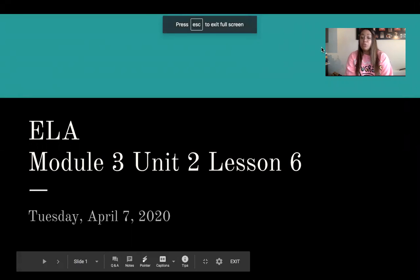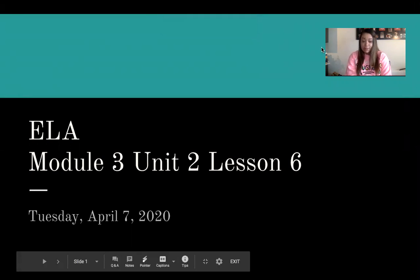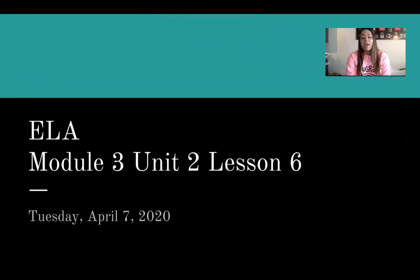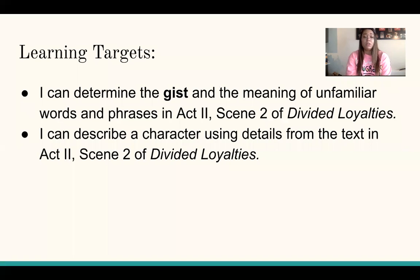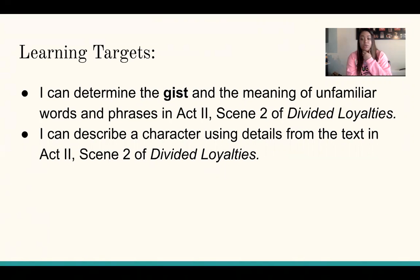Okay, so this is module 3, unit 2, lesson 6, and hopefully you're watching this on Tuesday, April 7th. The learning targets are: I can determine the gist and the meaning of unfamiliar words and phrases in act 2, scene 2 of Divided Loyalties. Determining the gist just means what is the text mostly about. And I can describe a character using details from the text in act 2, scene 2 of Divided Loyalties.